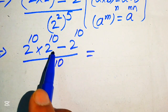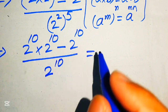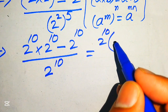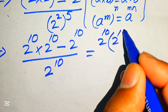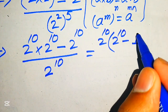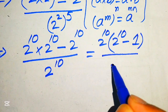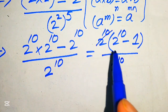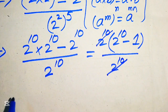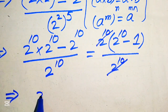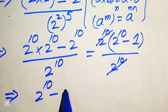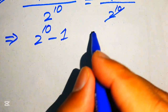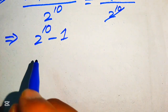In the numerator, 2 to the power of 10 is a common factor. Taking it out gives 2 to the power of 10 times (2 to the power of 10 minus 1), divided by 2 to the power of 10. The 2 to the power of 10 cancels, leaving 2 to the power of 10 minus 1.